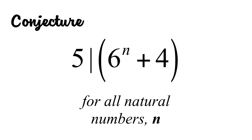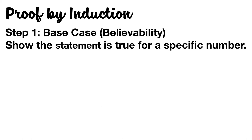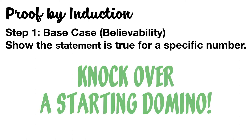So let's return to our conjecture. Our first step for a proof by induction is testing believability. We want to show that the statement is true for a specific number, usually the number one. And that's equivalent to knocking over a starting domino.